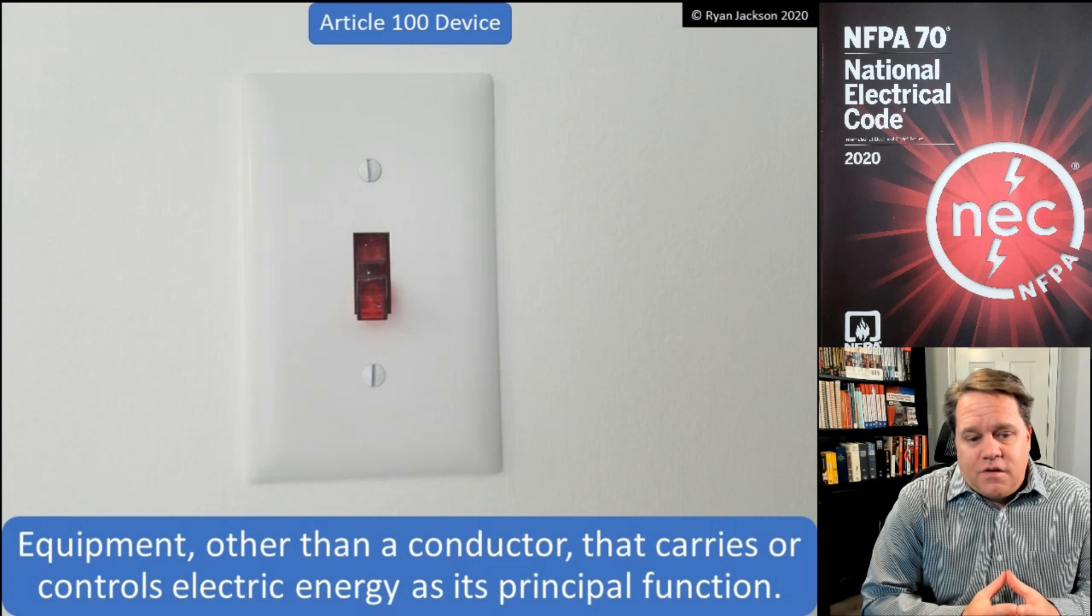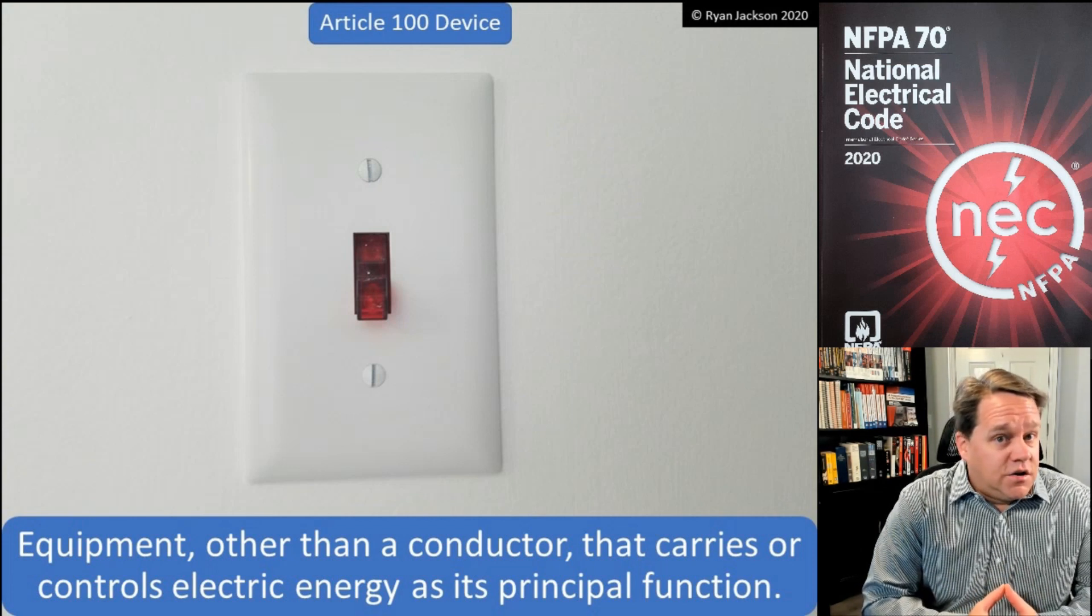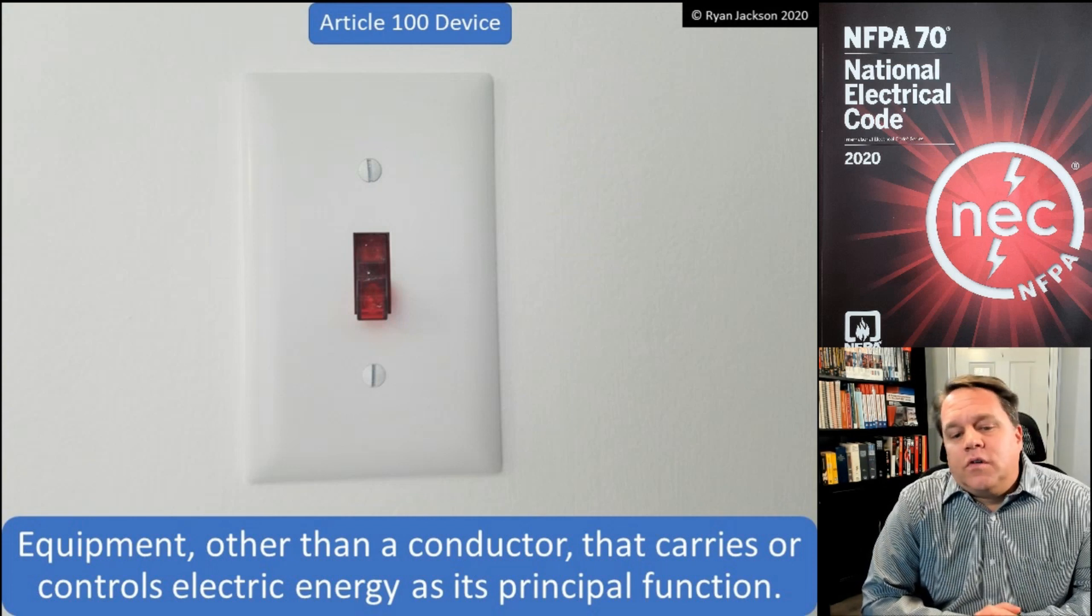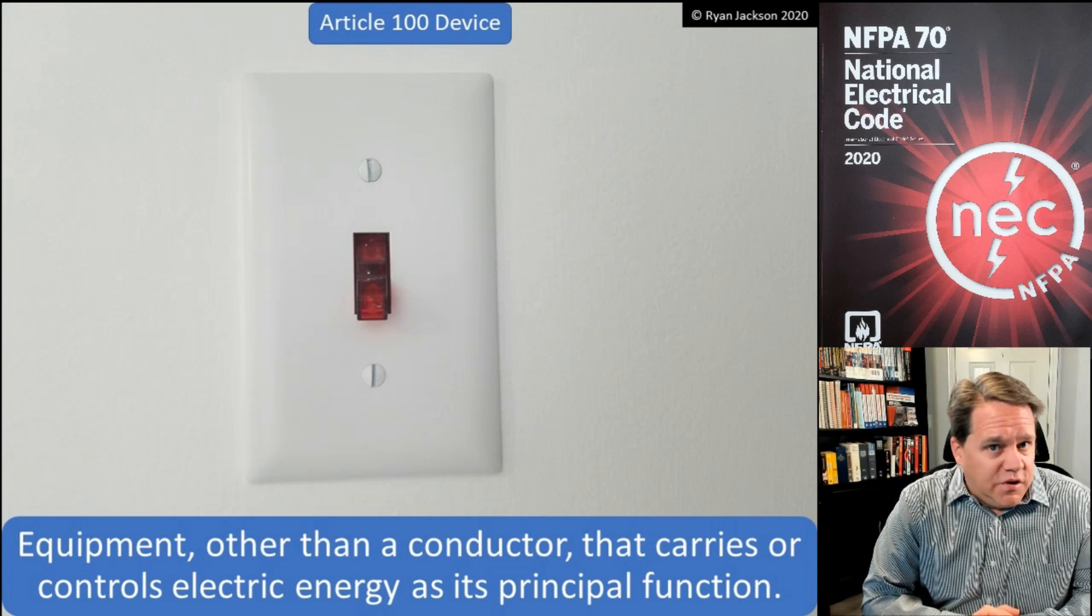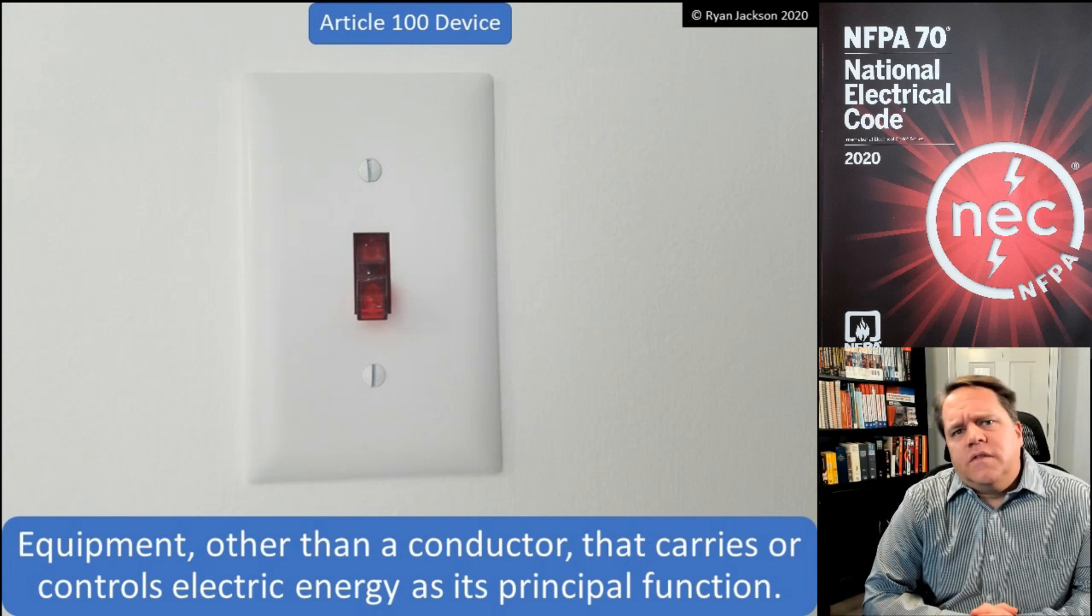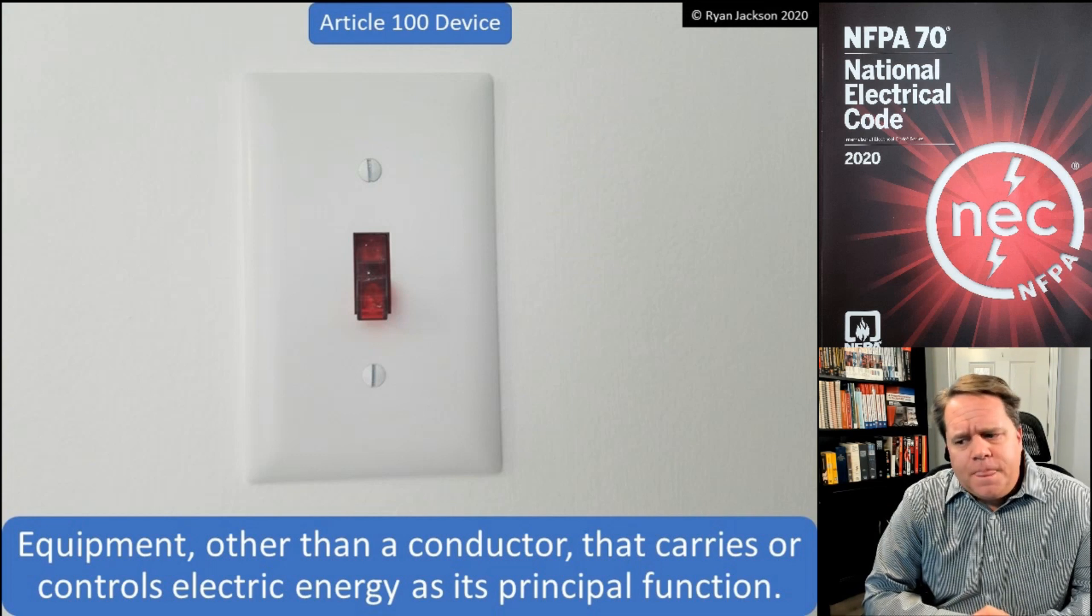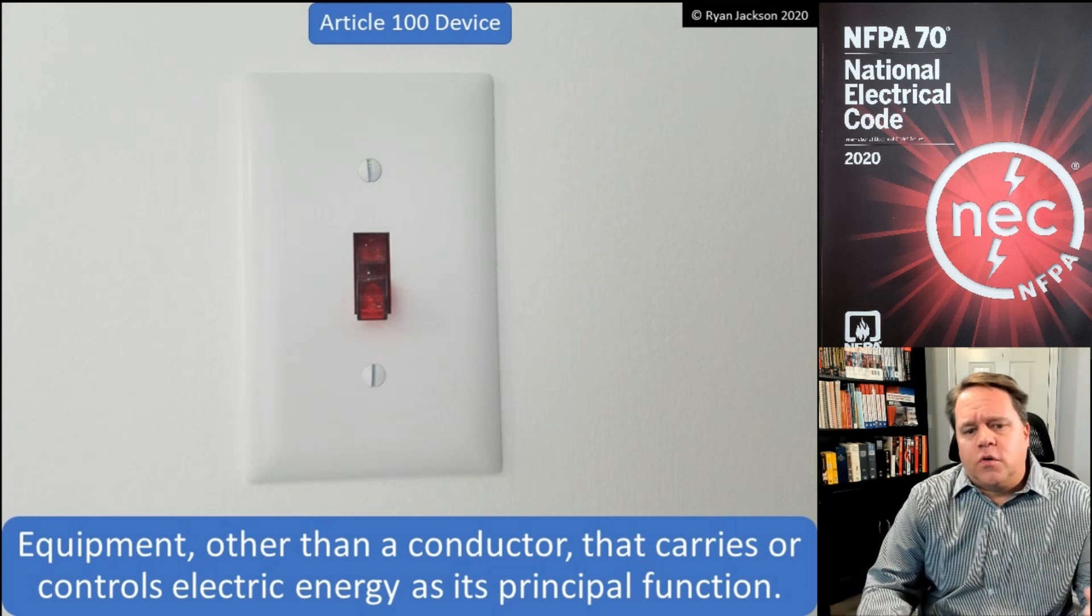Article 100 Device: this is equipment other than a conductor that carries or controls electric energy as its principal function. It was kind of interesting to watch the history of this definition. It used to say that it carries or controls electric energy.